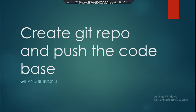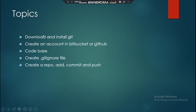Today we're going to be creating our first git repository in our local computer and then push it to the remote repository. We're going to download and install git first, then create an account in Bitbucket or GitHub — these are the cloud repositories — and then push your code base to the git repositories.